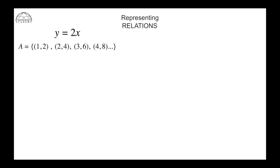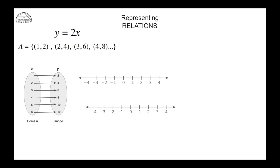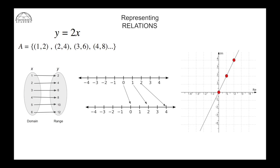There are a couple of other ways to represent a relation. Having a bubble diagram is one way — also called a mapping. Another way is using number lines to represent x and y: the x value 0 maps to 0, x value 1 maps to y value 2, x value 2 maps to y value 4. The third way, which we're quite familiar with, is plotting the points on a Cartesian plane and drawing the graph of the relation.